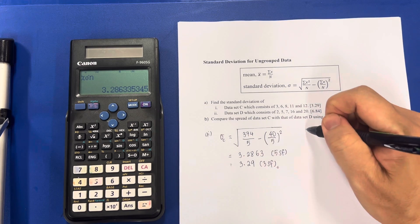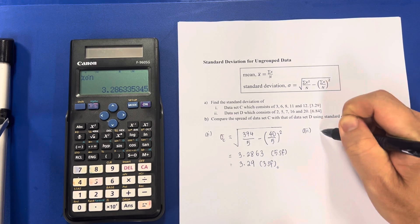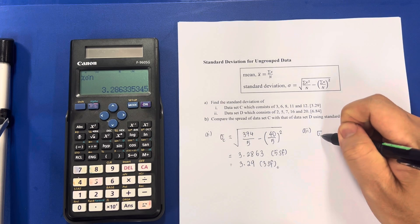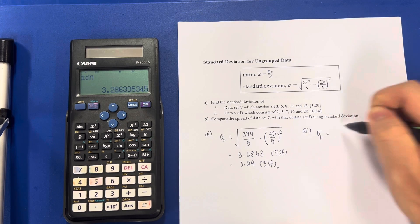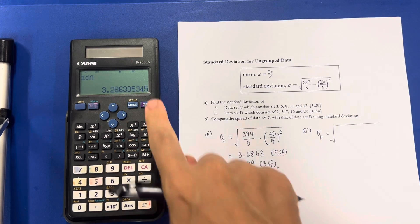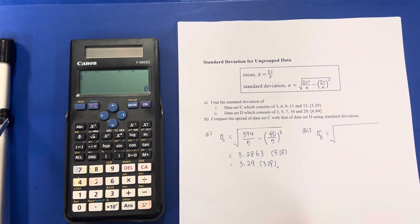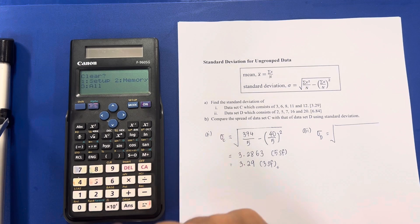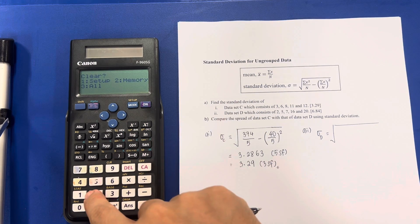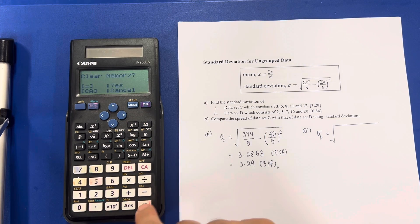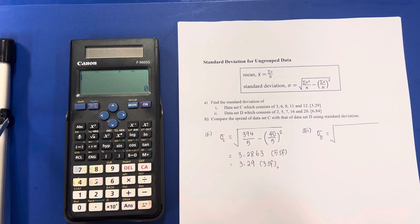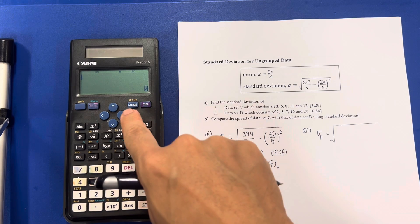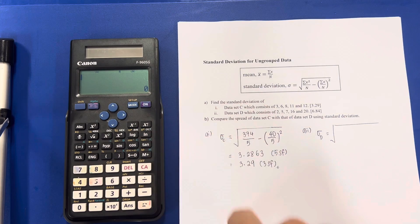And I repeat this for part 2. So, the variance for D, standard deviation for D is equal to the square root of. Now, I will need to reset this button to clear all the data. So, I press SHIFT, CLEAR. CLEAR the memory. Yes. Okay. Now. Again.